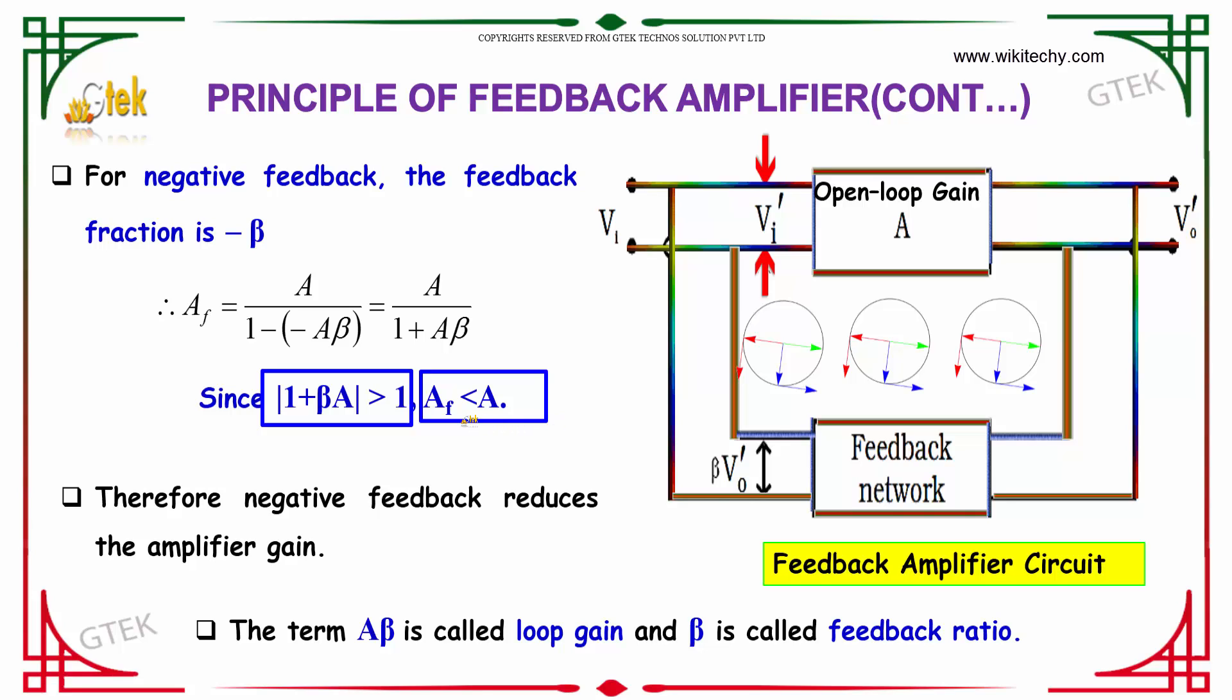Therefore negative feedback reduces the amplifier gain. The term Aβ is called loop gain and β is called the feedback ratio.